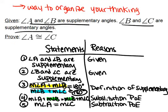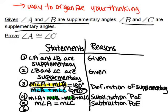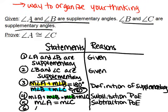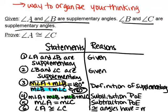Now we're almost there. We were trying to prove that angle A is congruent to angle C, and we've just shown that the measure of angle A equals the measure of angle C. So this last step says that angle A is congruent to angle C because congruent angles have equal measures. You can use symbols and shorthand in your proof to make it easier for yourself.